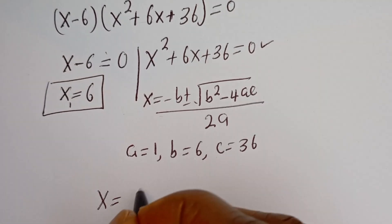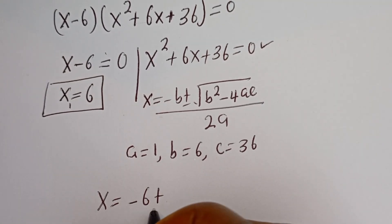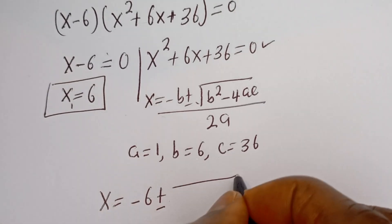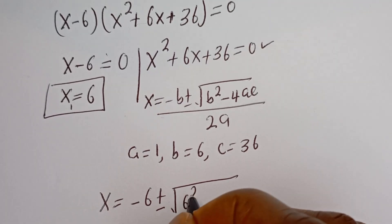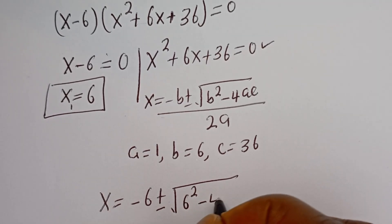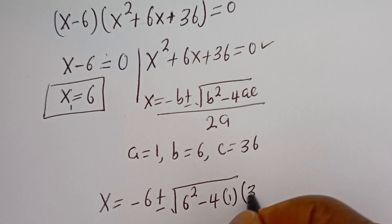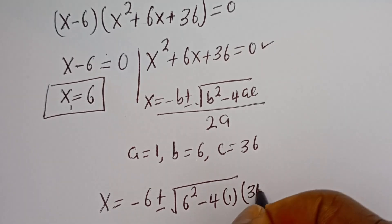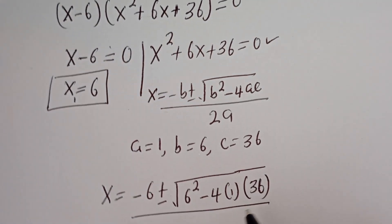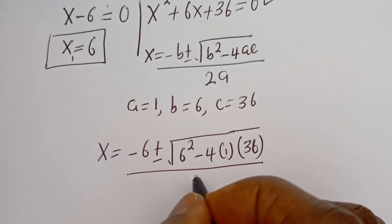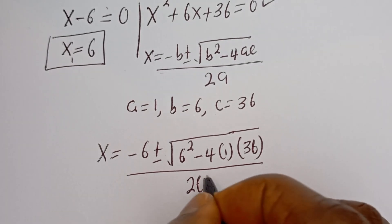x is equal to minus 6 plus or minus square root of 6 squared minus 4 multiplied by 1 multiplied by 36, divided by 2 multiplied by 1.